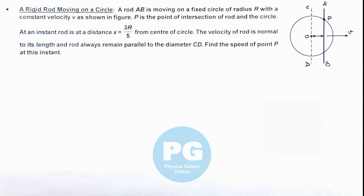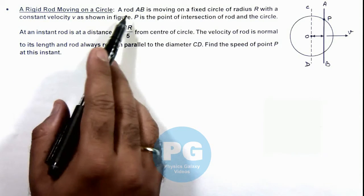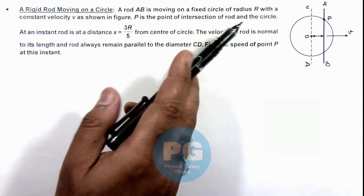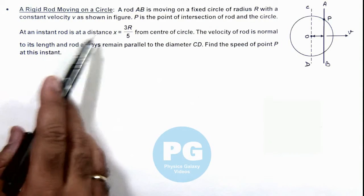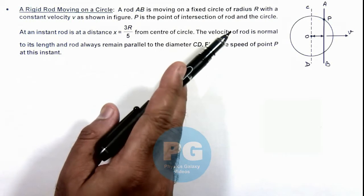In this illustration we'll discuss a rigid rod moving on a circle. Here a rod AB is moving on a fixed circle of radius R with a constant velocity v as shown in figure. P is the point of intersection of rod and the circle.